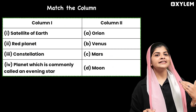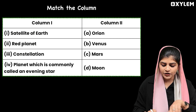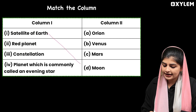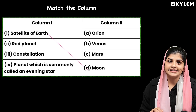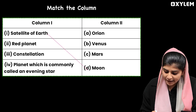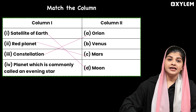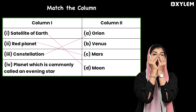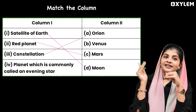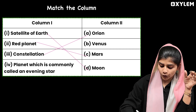Next question is match the column. The satellite of Earth is the Moon. The red planet is Mars. The planet which is commonly called the evening star is Venus.